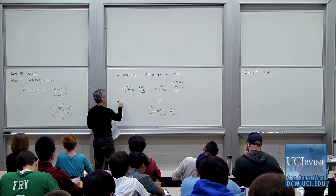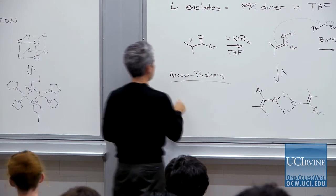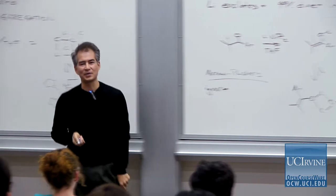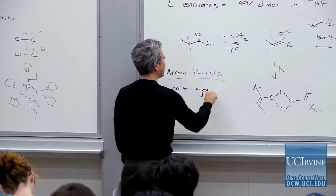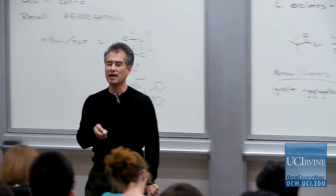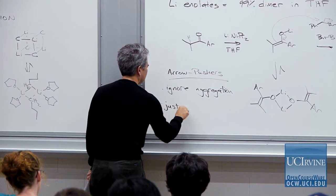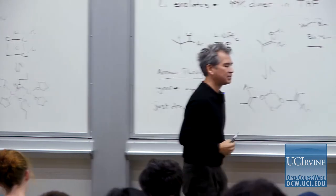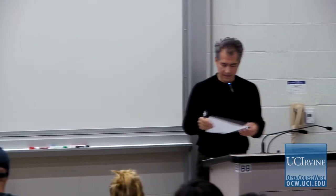That's going to be our rule for this class. For arrow pushing, ignore aggregation — just acknowledge that it's there mentally, but when you push your arrows, just draw the monomers. Draw monomers of butyllithium, draw monomers of your Grignard reagents, draw monomers of your lithium enolates.